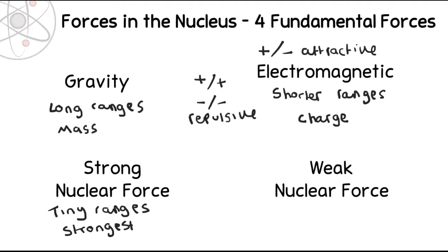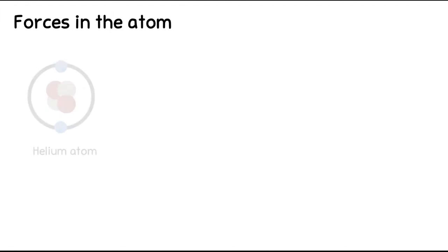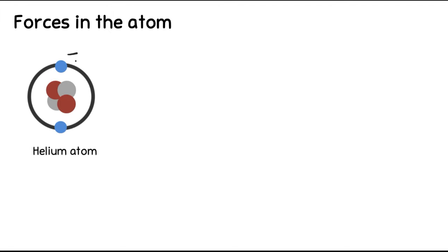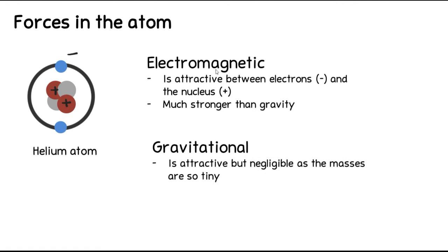Now let's look at forces in the atom before we go into forces in the nucleus. Here is the helium atom — it's got negative electrons and a positive nucleus because of the protons. The main force acting on an atom as a whole is actually electromagnetism, because we're on quite a small scale with quite small masses. Electromagnetism is attractive in an atom because it's between the negative electrons and the positive nucleus — they're opposite charges. In an atom it is much stronger than gravity.